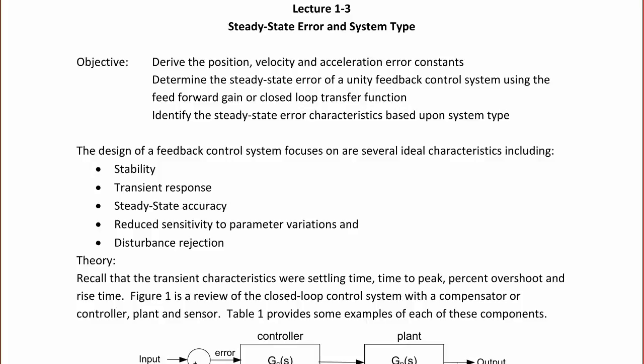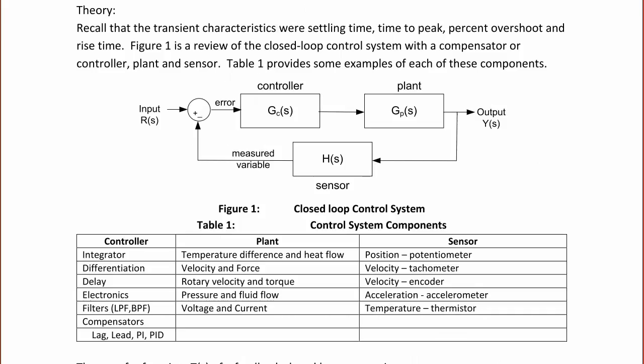Table 1 provides some examples of real-world components that model these. A controller can be created with an operational amplifier or with discrete components such as resistors, inductors, or capacitors. Examples of controllers would be an integrator, a differentiator, a delay, a filter, low-pass filter, bandpass filter, or compensators such as lag lead, PI, PID, PD, or P.